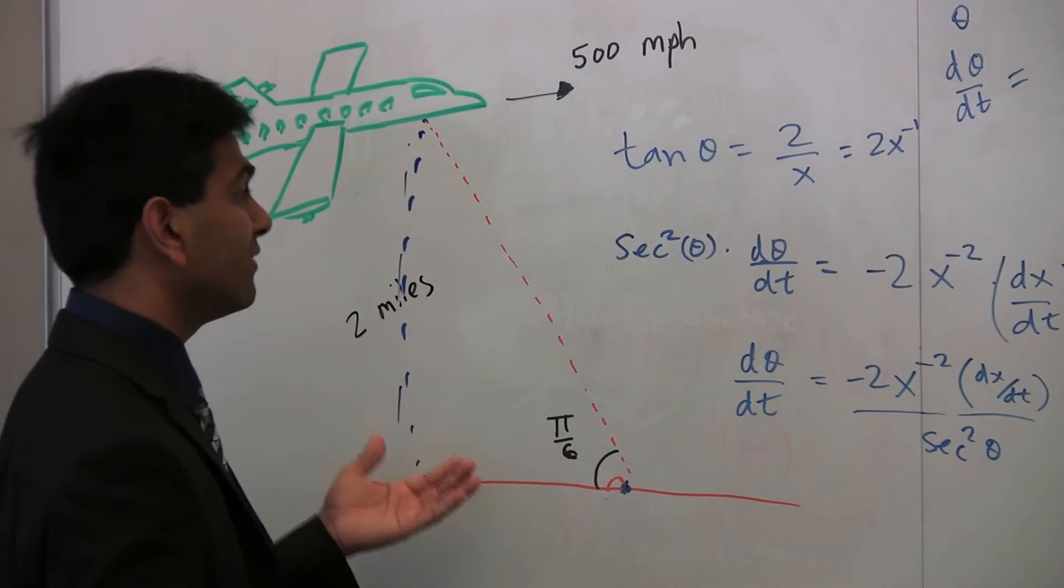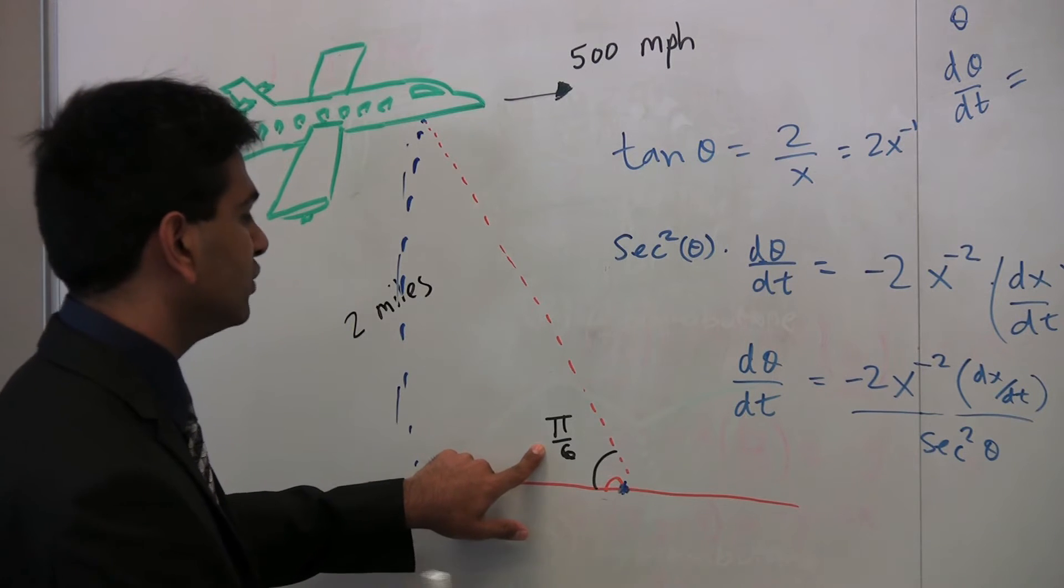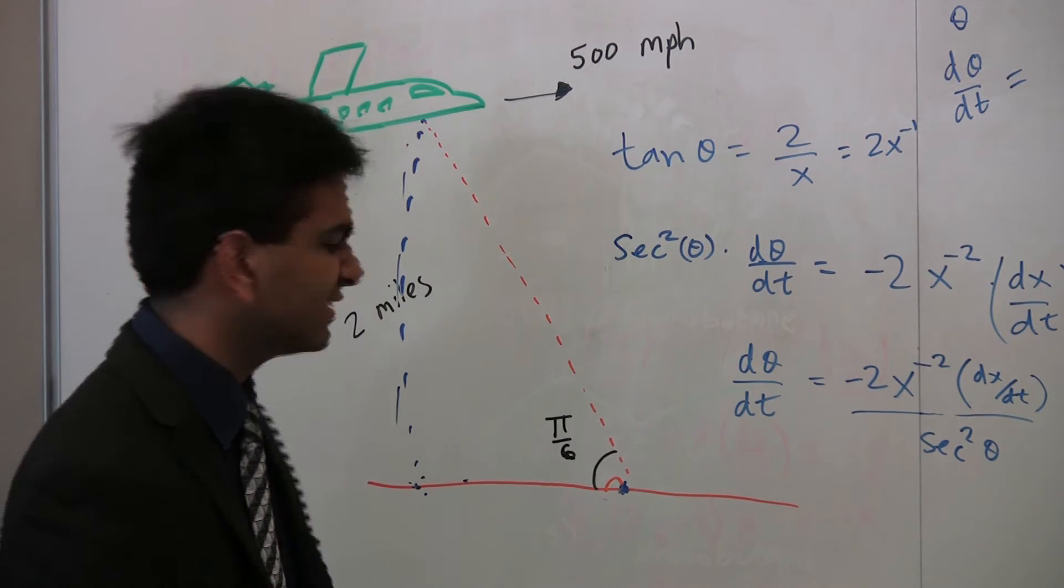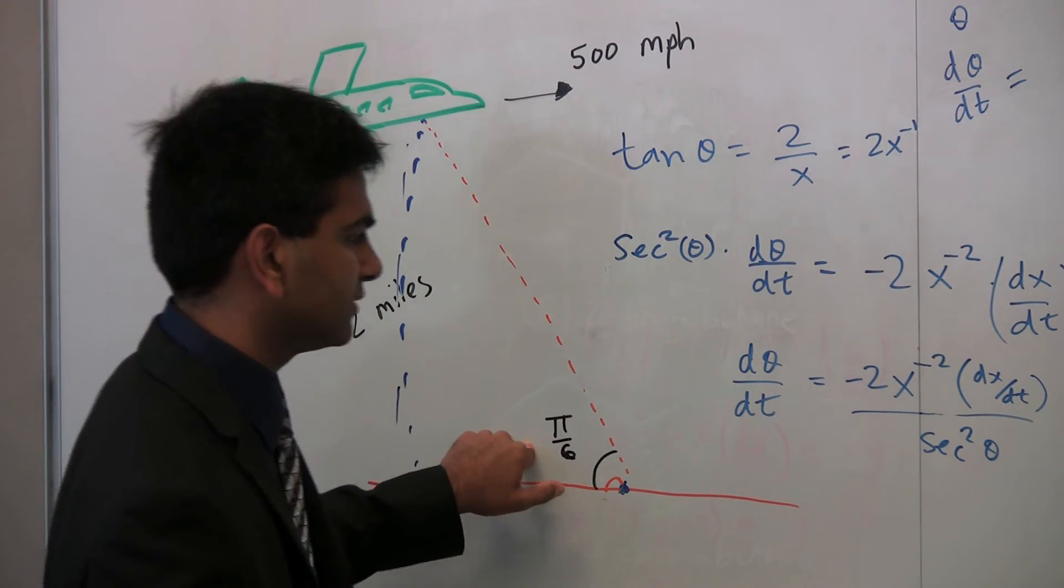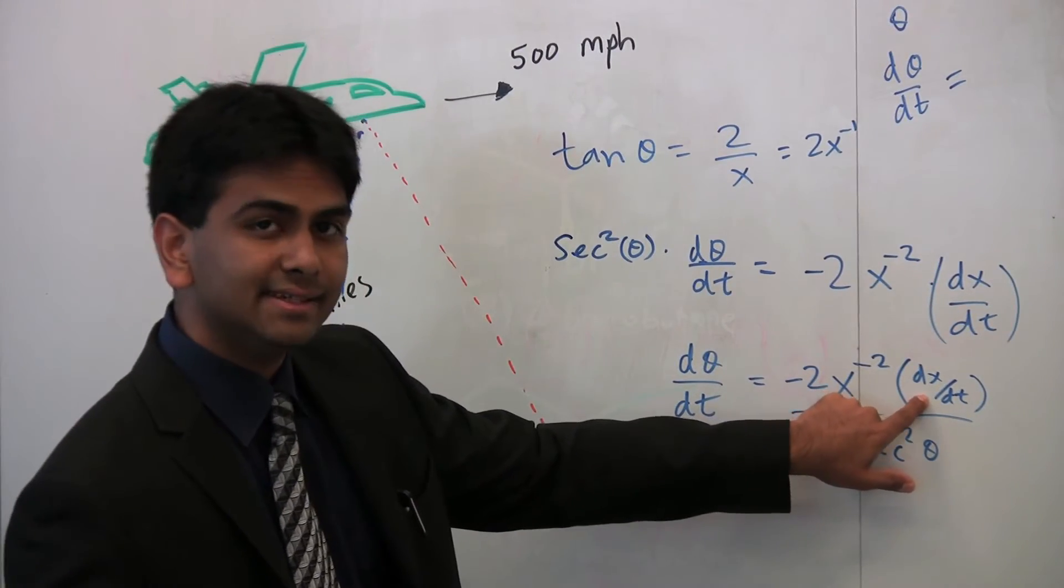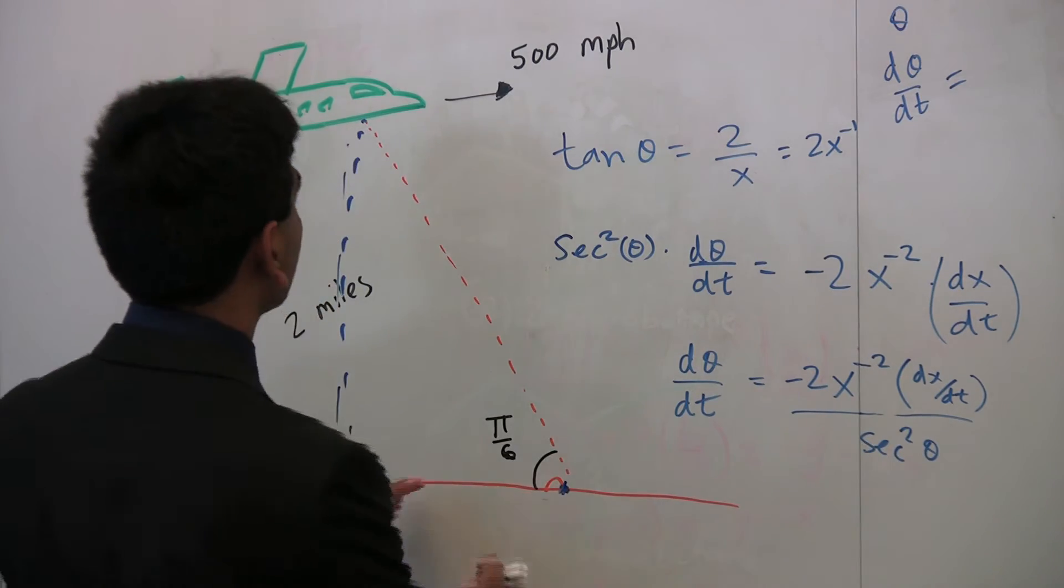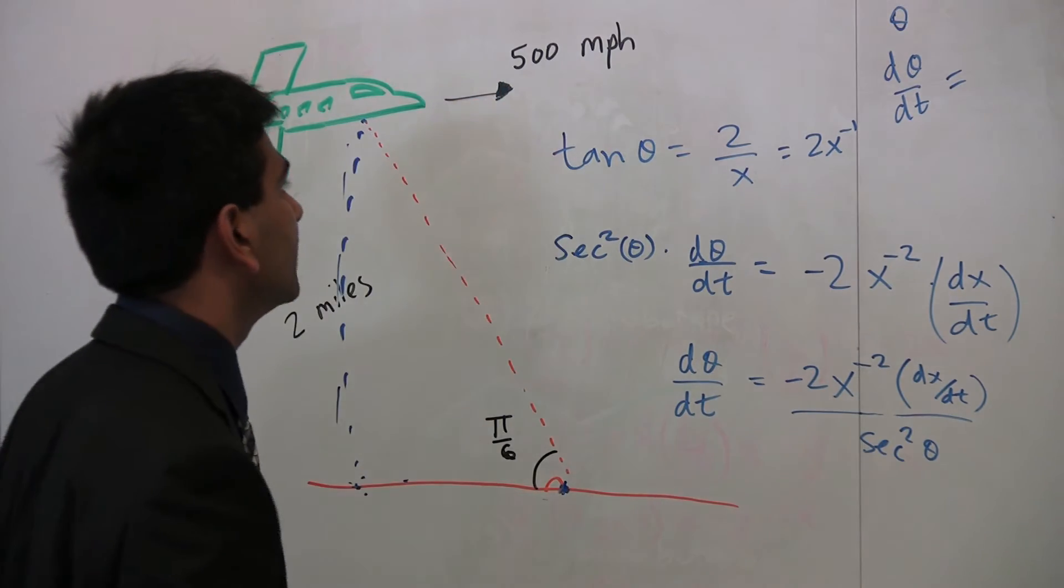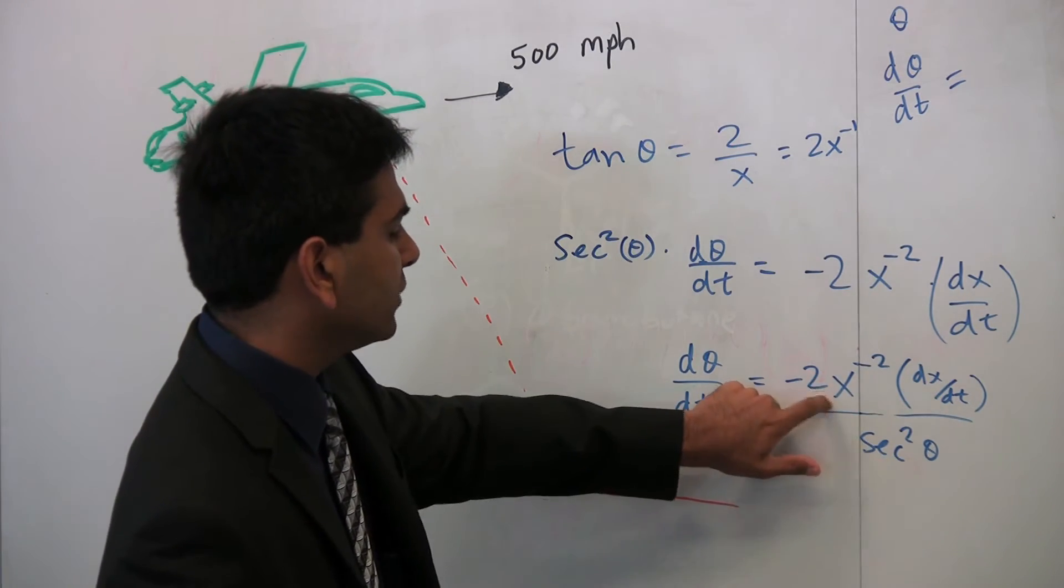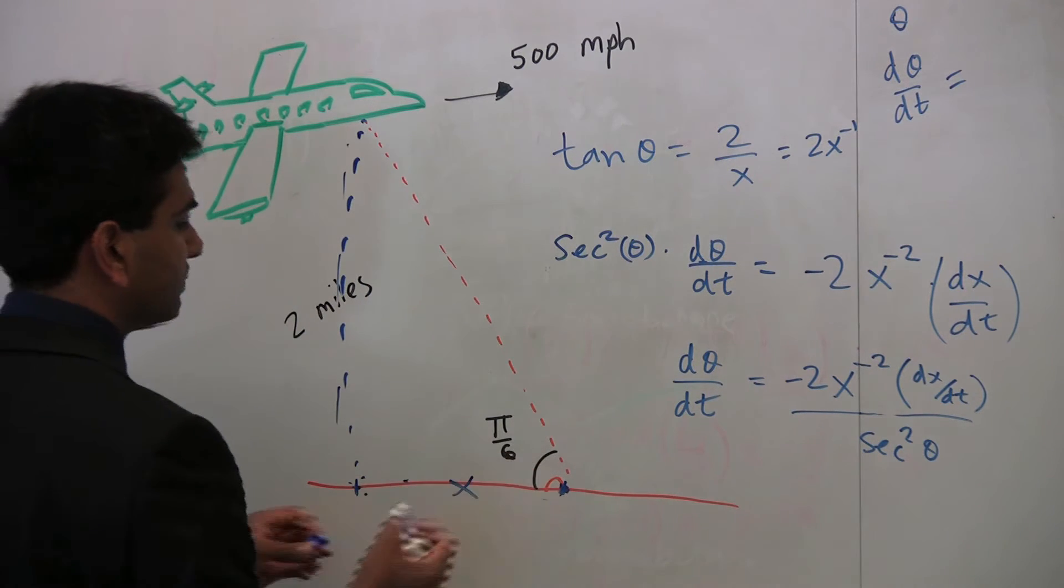Now, we're given that, well, obviously the question actually is how fast is the angle changing when, how fast do you have to change the angle when the angle is pi over 6, that's around 30 degrees. So, we know what theta is, so using that we can figure out what secant squared of theta is. We know what dx/dt is, that's how fast x is changing, right? dx/dt is how fast x is changing, and we know that it's changing by 500 miles an hour. So, we know this, we know this, but how do we find x? What is x? What is this distance right now, when the angle is pi over 6?